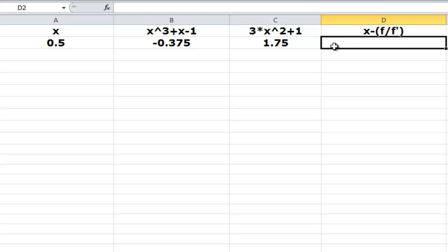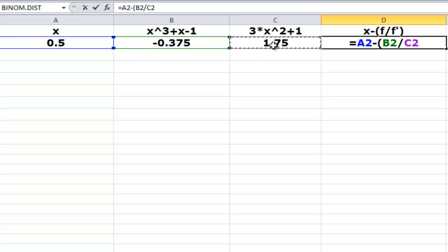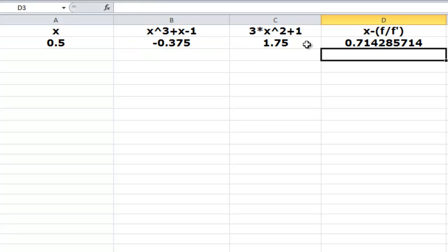And then here, what we get, we have to press equal to sign first. And then we will do x minus fx divided by f prime x. So here we have everything laid out.